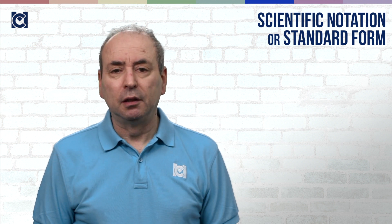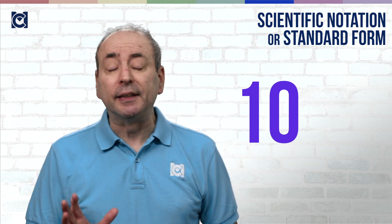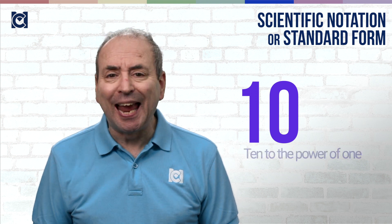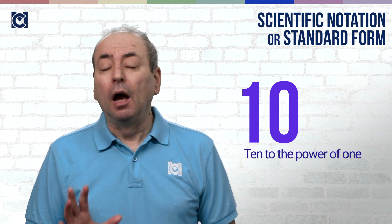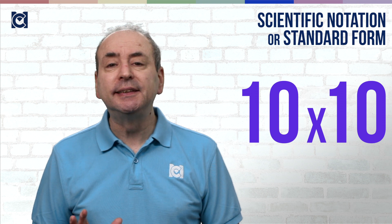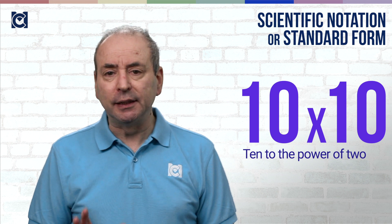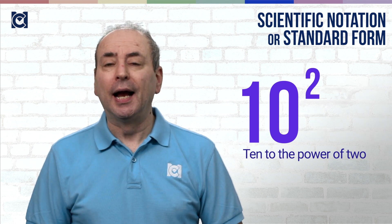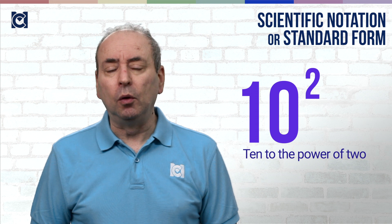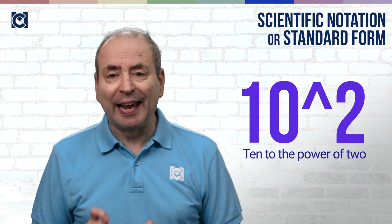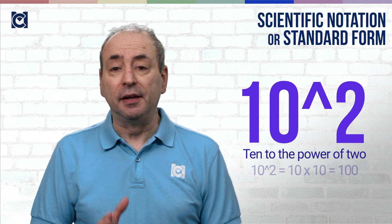Scientific notation starts with the number 10, because we have 10 digits. We can write the number 10 as 10 to the power of 1, because there's only one lot of it. And we can write 10 times 10 as 10 to the power of 2. We most commonly write this as 10 with 2 as a superscript, but we can also write it as 10^2. Both of these mean 10 to the power of 2, which means 10 times 10.